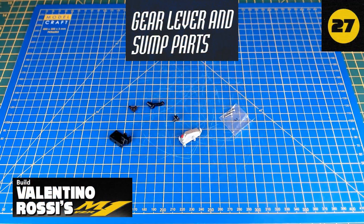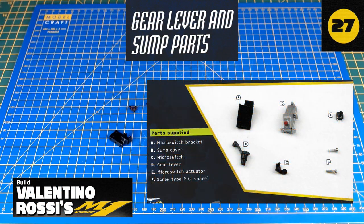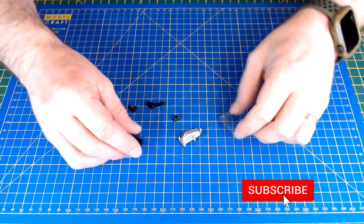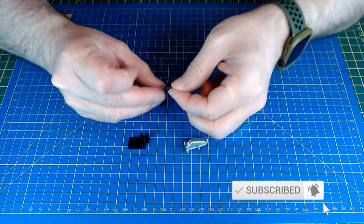Okay, so parts laid out here for issue 27 of the Valentino Rossi MotoGP bike. It's more parts for the engine - looks like it's gear lever and sump parts, and another tiny little micro switch.